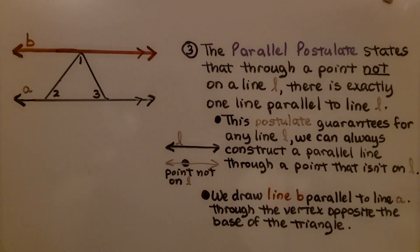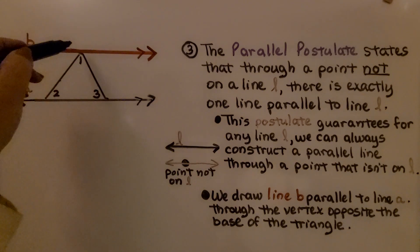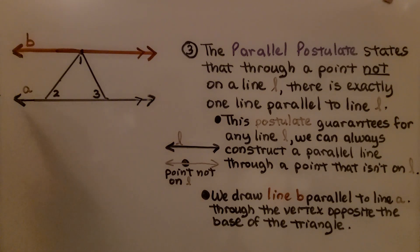This postulate guarantees for any line L, we can always construct a parallel line through a point that isn't on L. Using that, we draw line B parallel to line A.